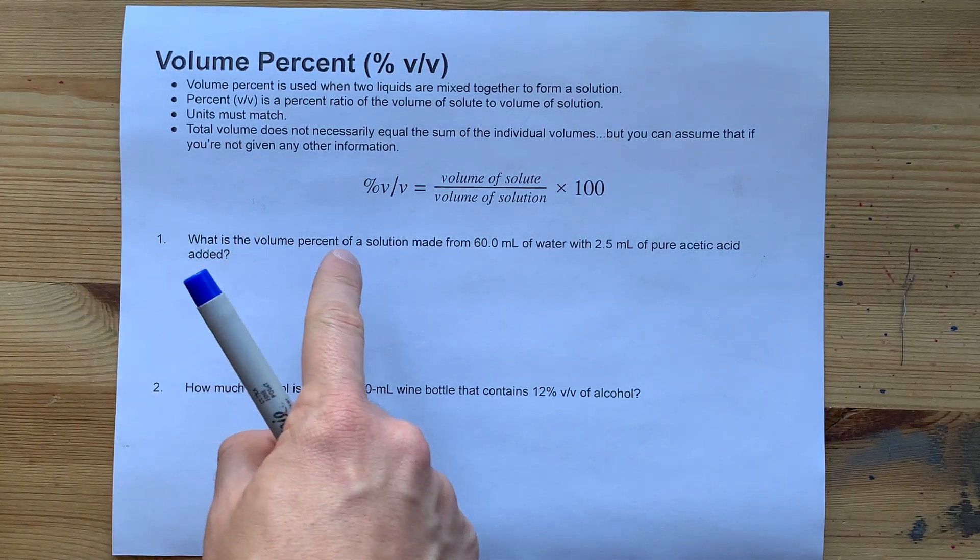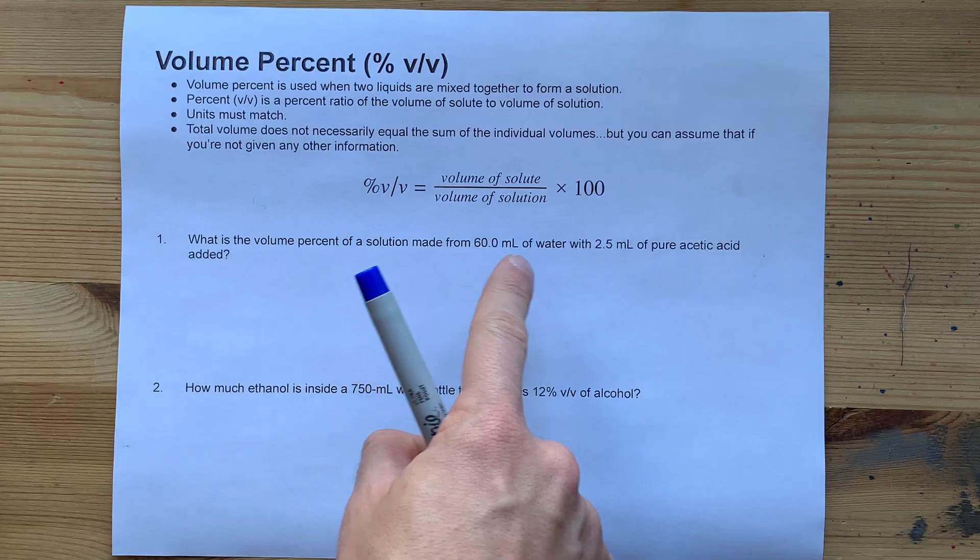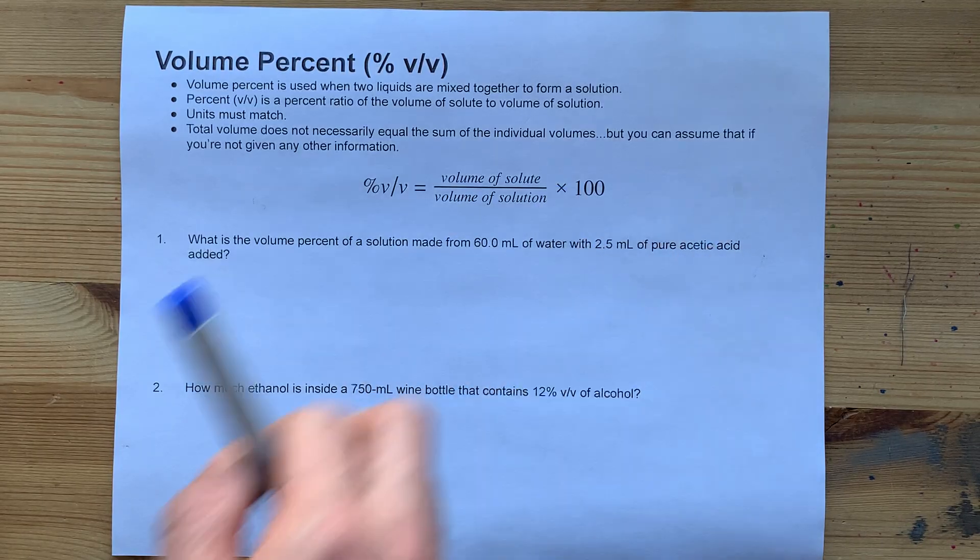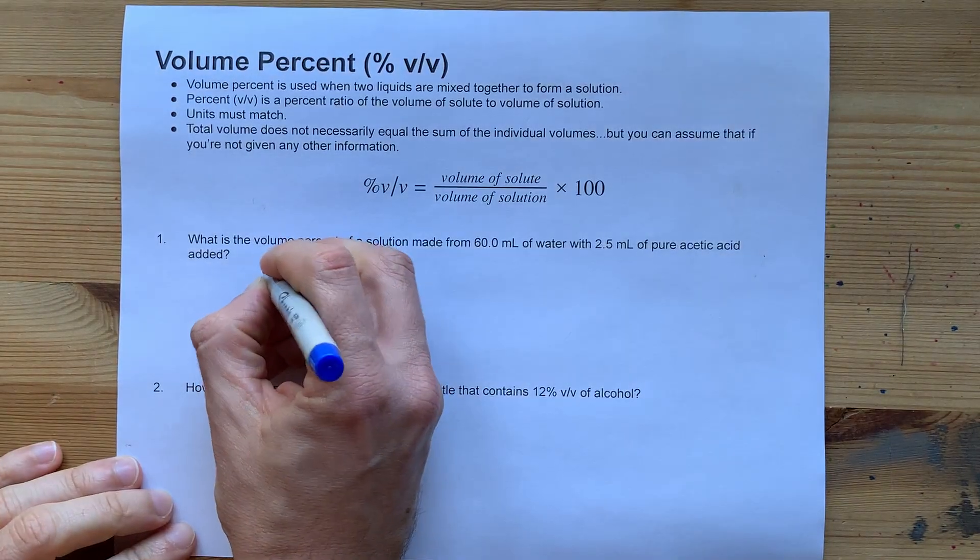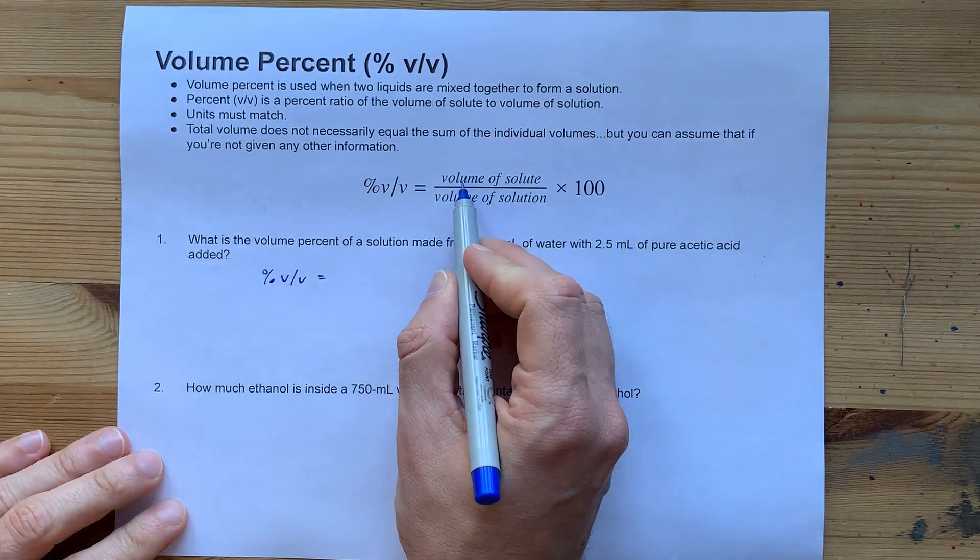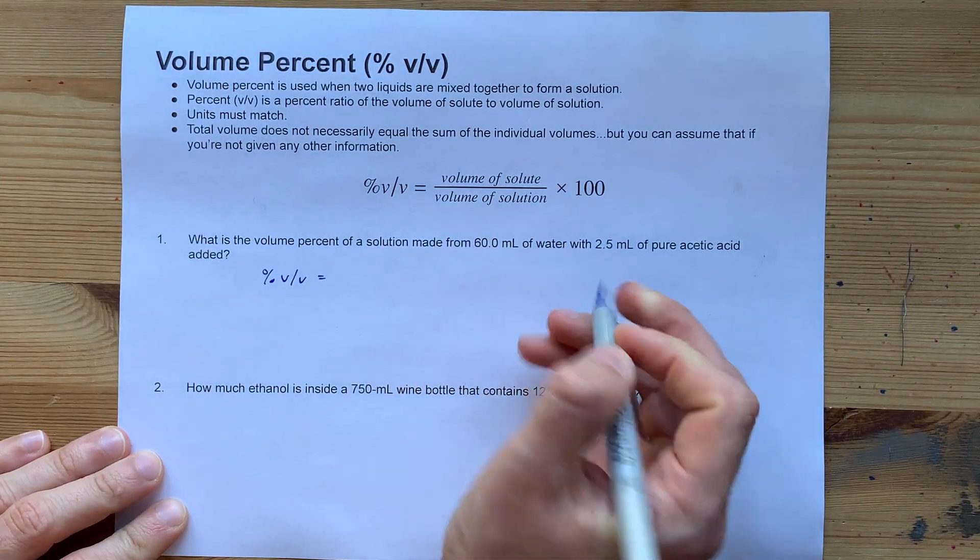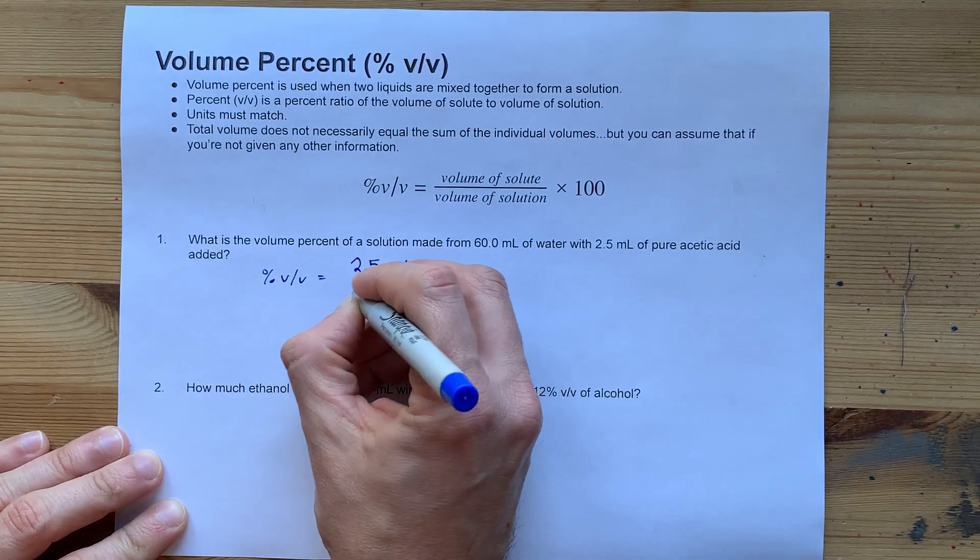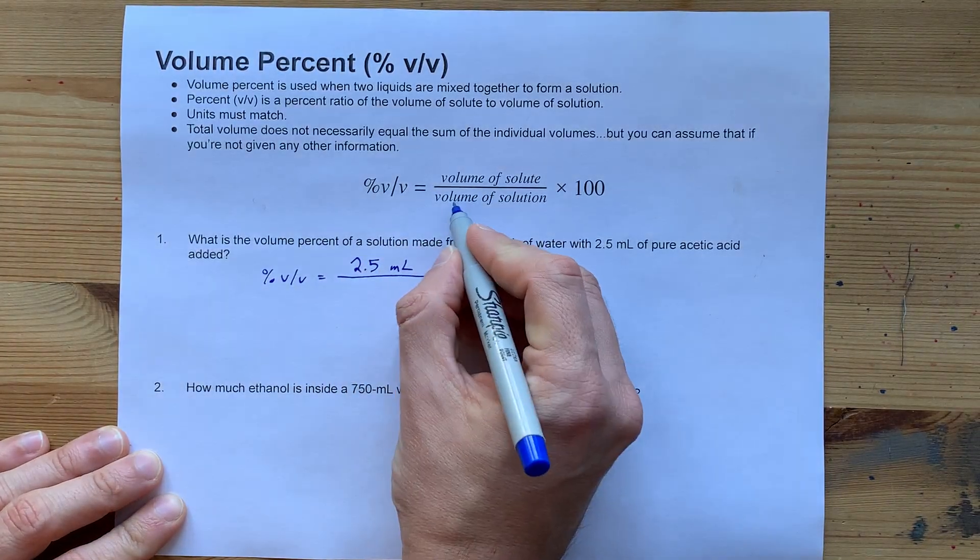What is the volume percent of a solution made from 60 milliliters of water with 2.5 milliliters of pure acetic acid added? Well, my percent by volume is the mass of solute, or sorry, volume of solute. That's 2.5 milliliters for me.